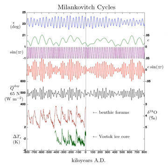The mid-Pleistocene transition occurred with a switch to the 100,000-year cycle matching eccentricity. The transition problem refers to the need to explain what changed one million years ago.